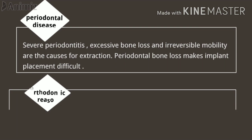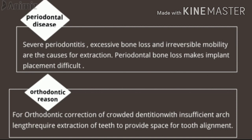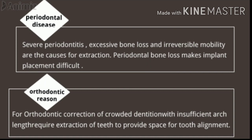Orthodontic reasons are another indication for extraction of a tooth which is not carious — not cavitated, a sound tooth — because it is the need of the treatment. Patients who are about to undergo orthodontic correction of their crowded dentition, if there is insufficient arch length, require extraction of teeth to provide space for tooth alignment. The most commonly extracted teeth are maxillary and mandibular premolars — this is an important point to remember.